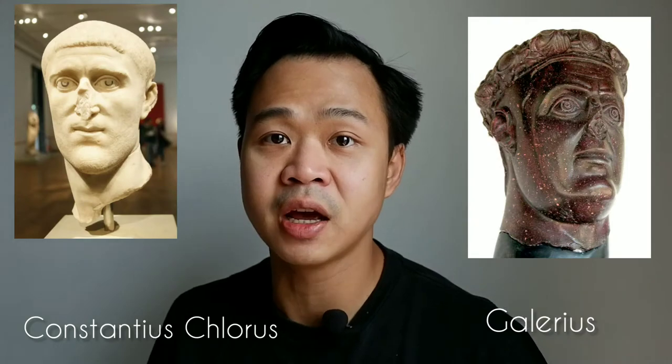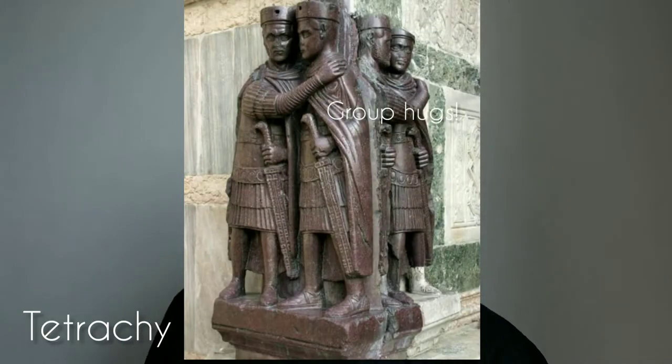Later on, Diocletian appointed two junior emperors — someone by the name of Constantius and Galerius. So with these four people ruling the Roman Empire, divided into four, we know it as the Tetrarchy — the rule of four. Diocletian made a great idea; he restored the Roman Empire into orderliness.